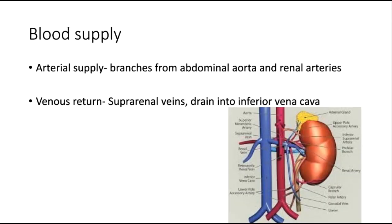Blood supply. The adrenal glands are supplied by branches from the abdominal aorta and renal arteries. Venous return is by the suprarenal veins, which drain into the inferior vena cava.